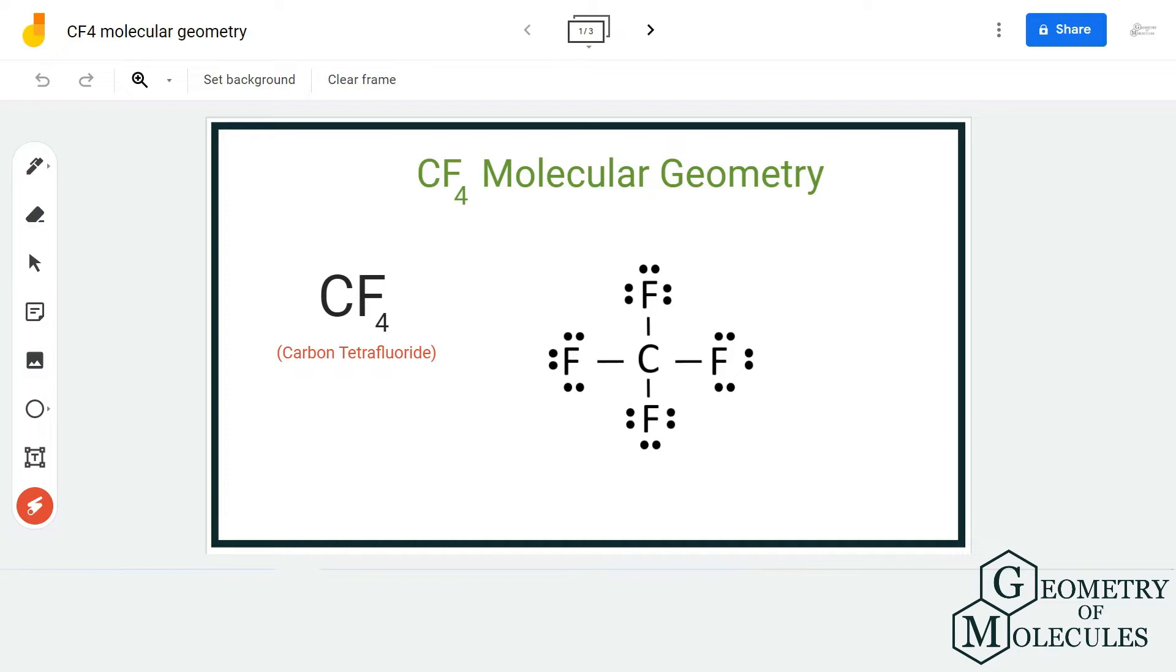Hi guys, welcome back to our channel. In today's video, we are going to help you determine the molecular geometry for CF4 molecule. It's a chemical formula for carbon tetrafluoride. To determine its molecular geometry, we first need to look at its Lewis structure. So this is the Lewis structure of CF4 in which the carbon atom is in the center and it is forming bonds with four fluorine atoms.